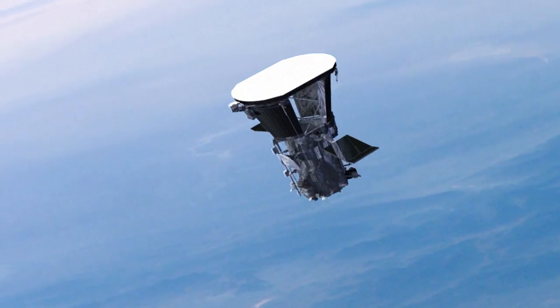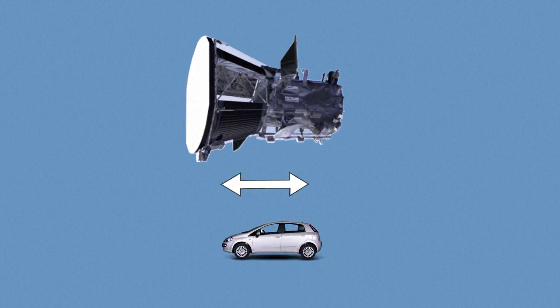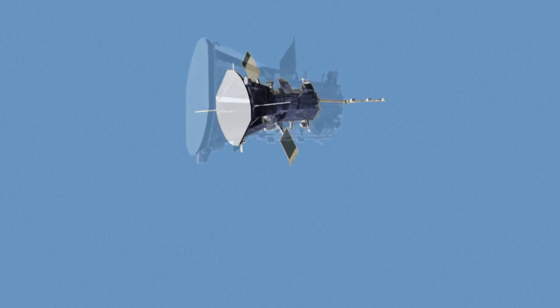The size of a small car, the probe is equipped with a carbon-composite heat shield to keep its instruments cool enough to operate. It's fitted with solar arrays and electric antennas.